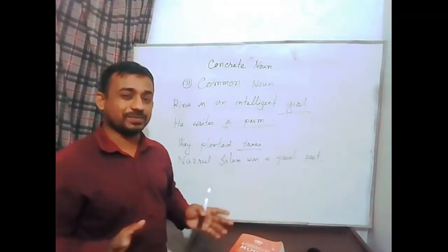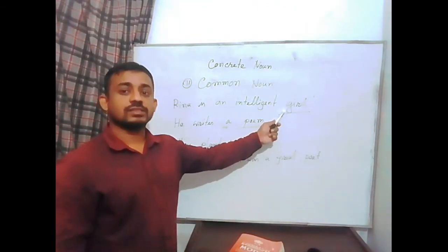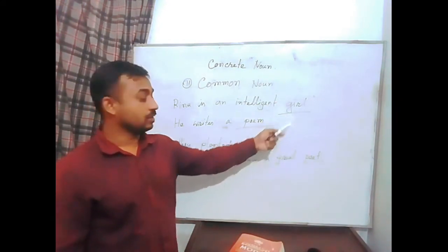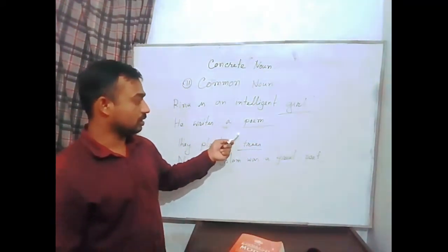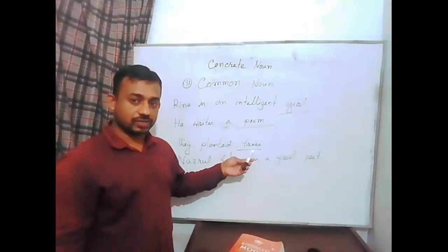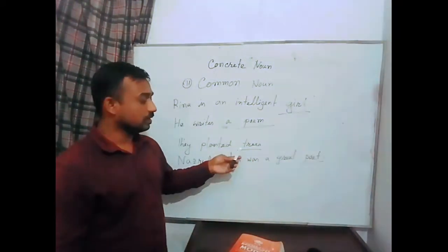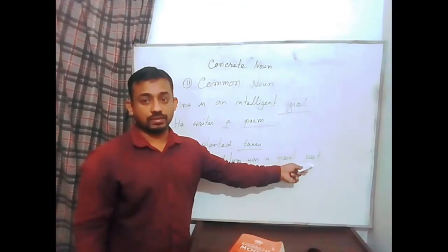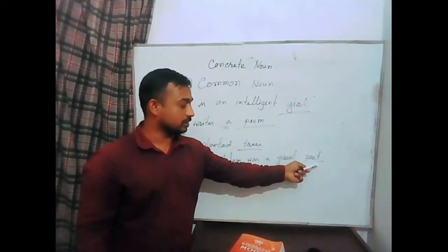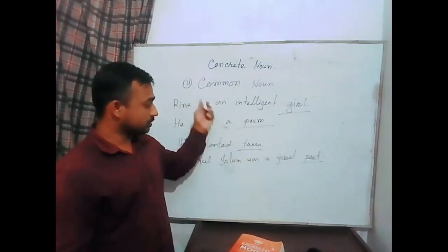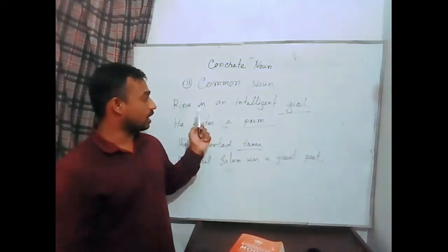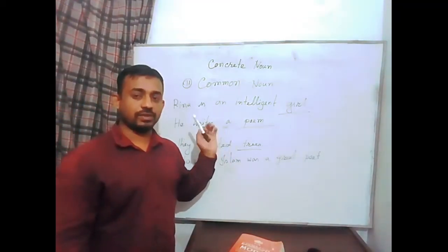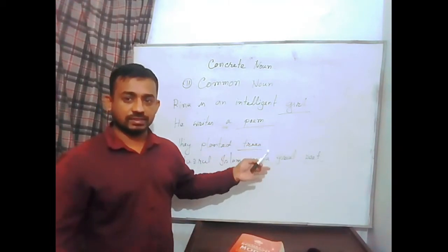These nouns show the whole things of the same kind. 'Girl' represents all girls in one word. 'Poem' is a literary word and also a common noun. 'Trees' — all trees are common nouns. And 'poet' is the name of a profession. This type of noun is called common noun. These nouns are used as objects of a sentence. Nouns can be used as subject, object, or complement in a sentence.